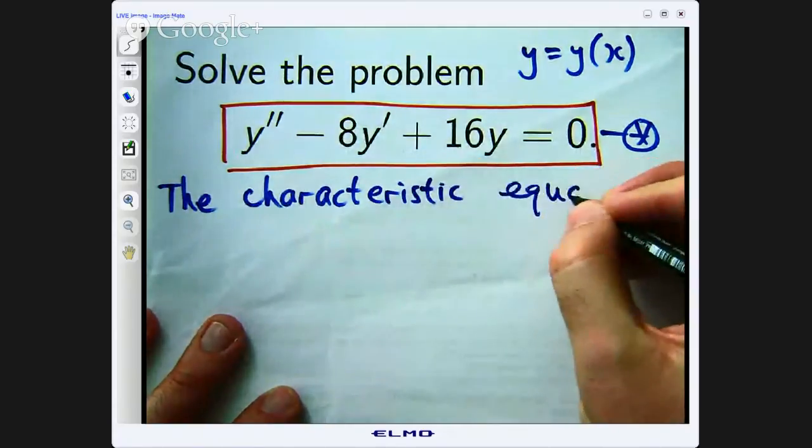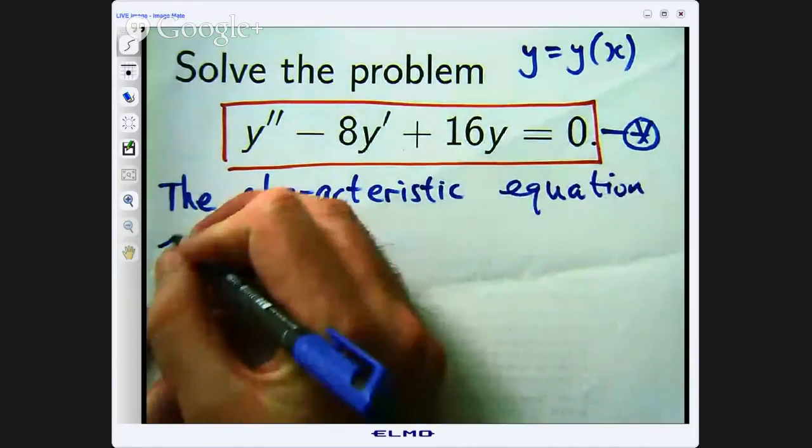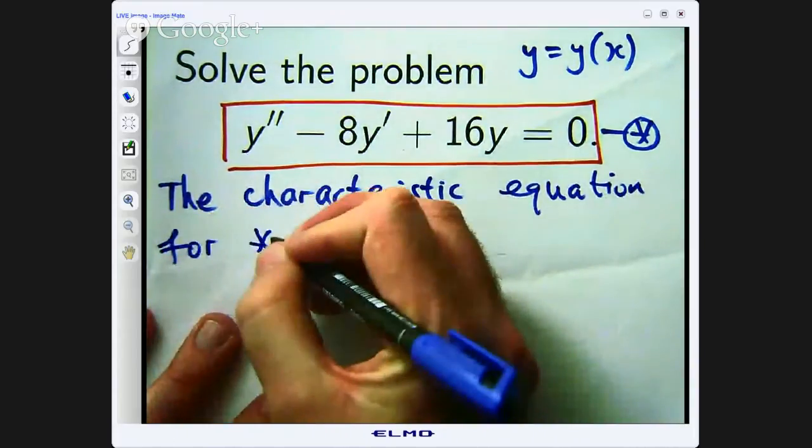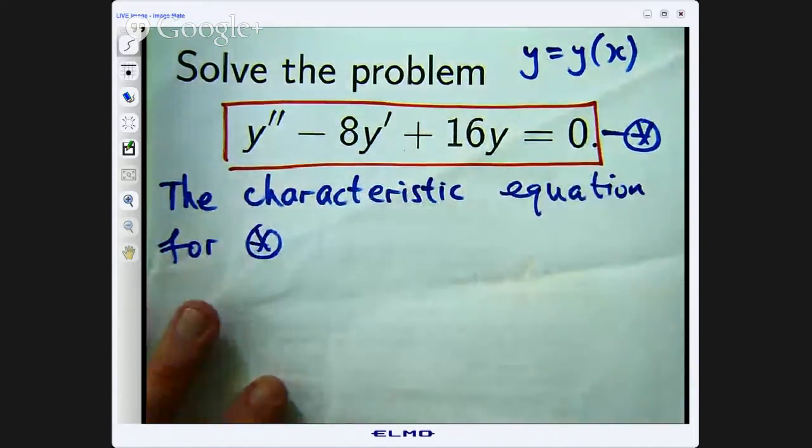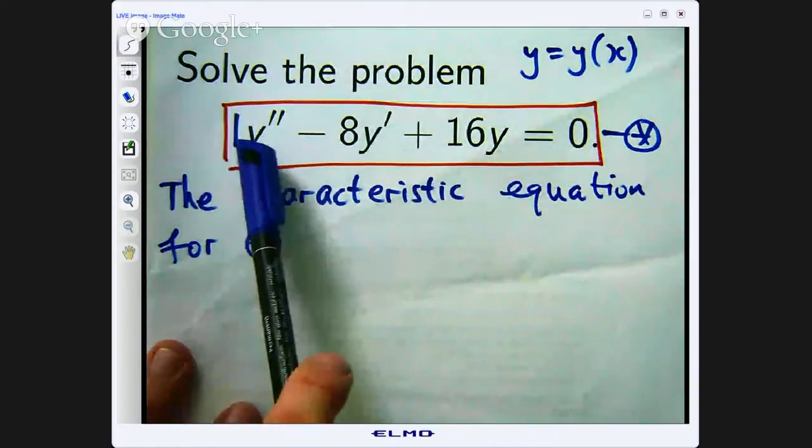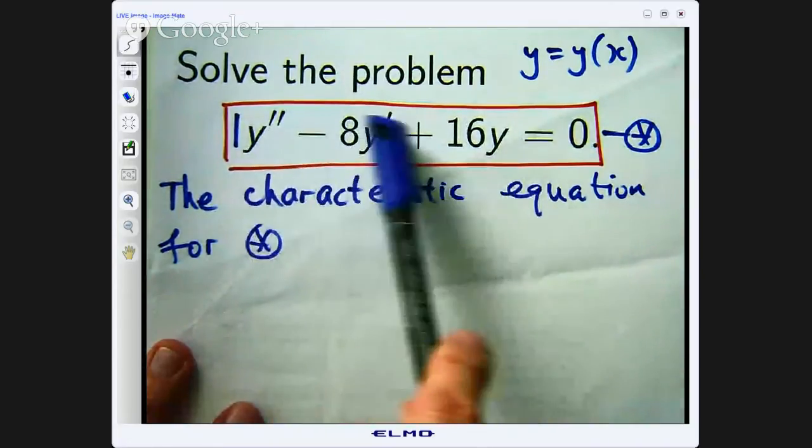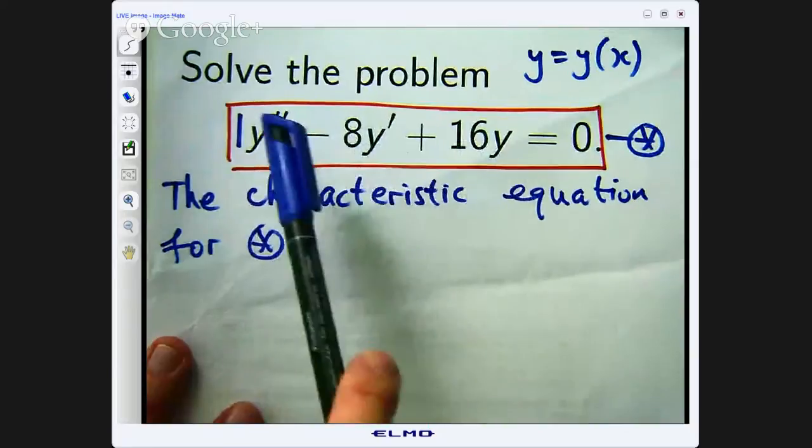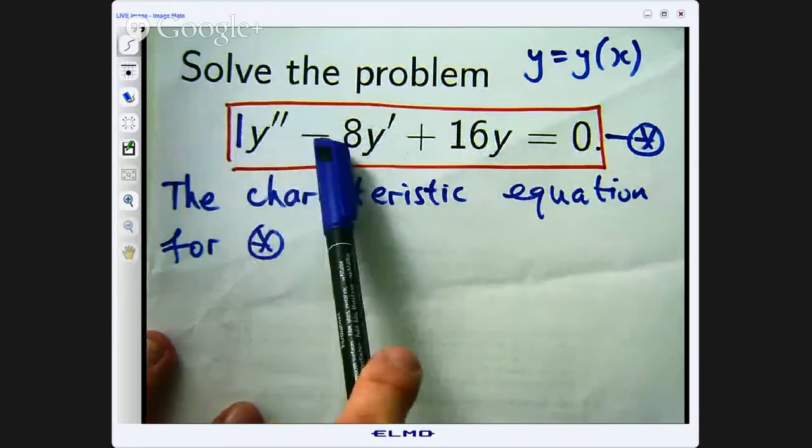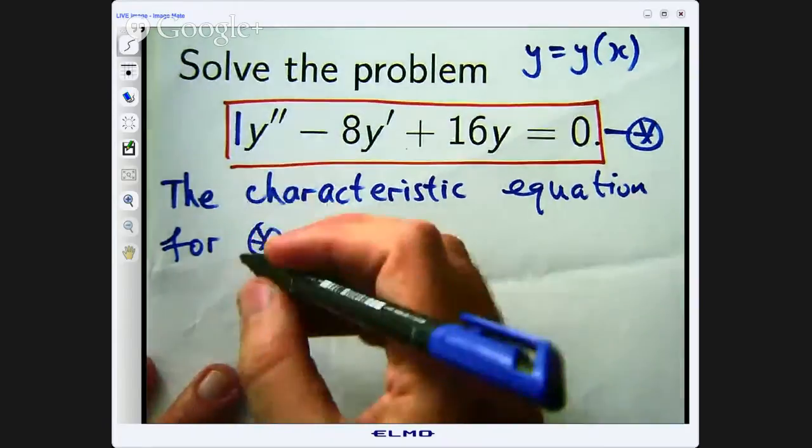So, this special quadratic equation called a characteristic equation for this differential equation can be built or constructed in the following way. Look at each of these derivatives and the y and the number that precedes each of these terms, the coefficient.